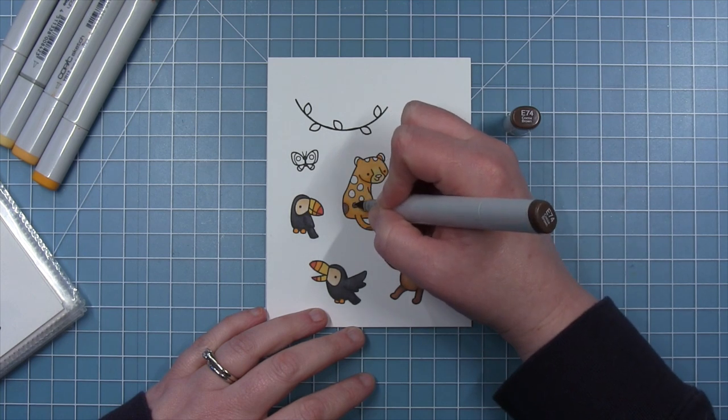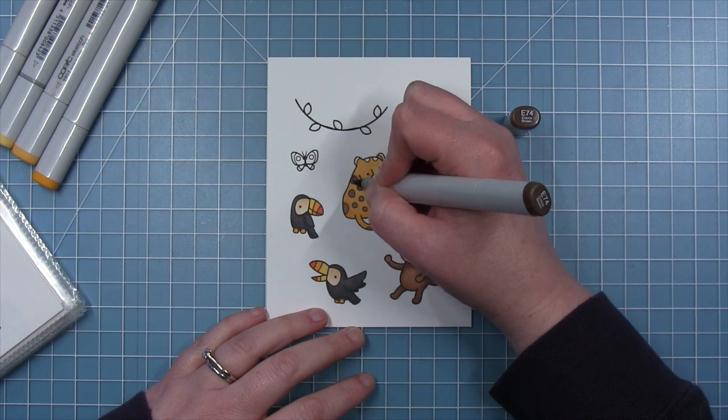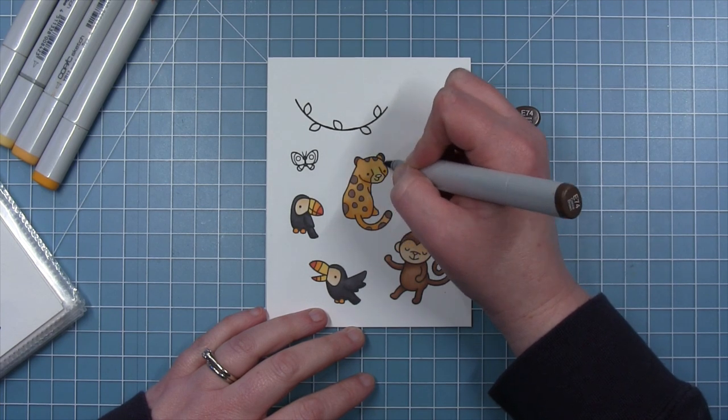So here's the nose with that YR32. And then I'm using this E74 for the spots, as well as the edges of the ears and the nose.